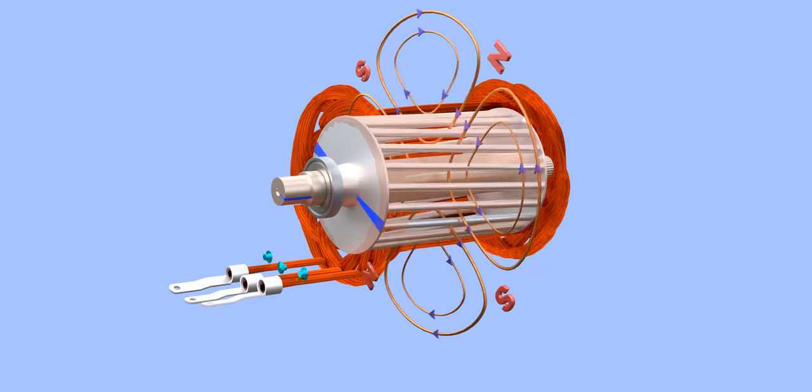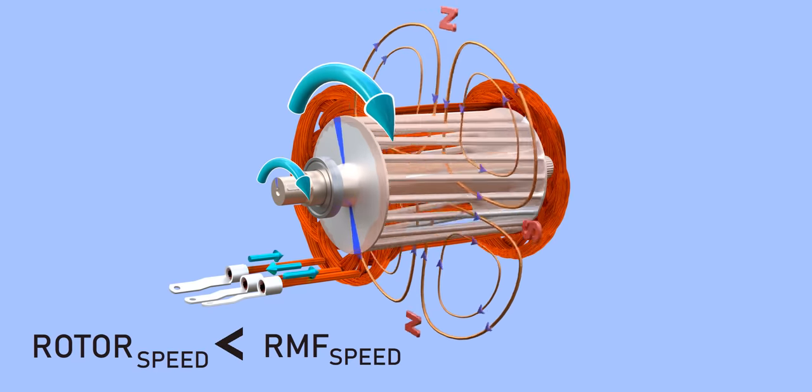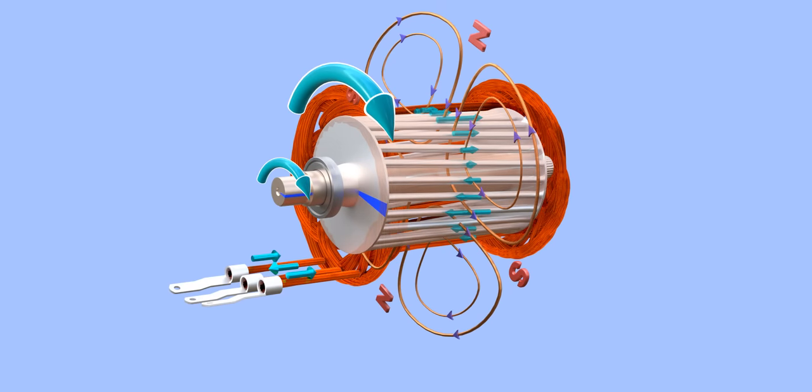In an induction motor, the speed of the rotor is always less than the RMF speed. Please note down the direction of current induced in the rotor bars in this case. You can easily see here that the driving force on the rotor is in the same direction of the rotor rotation.